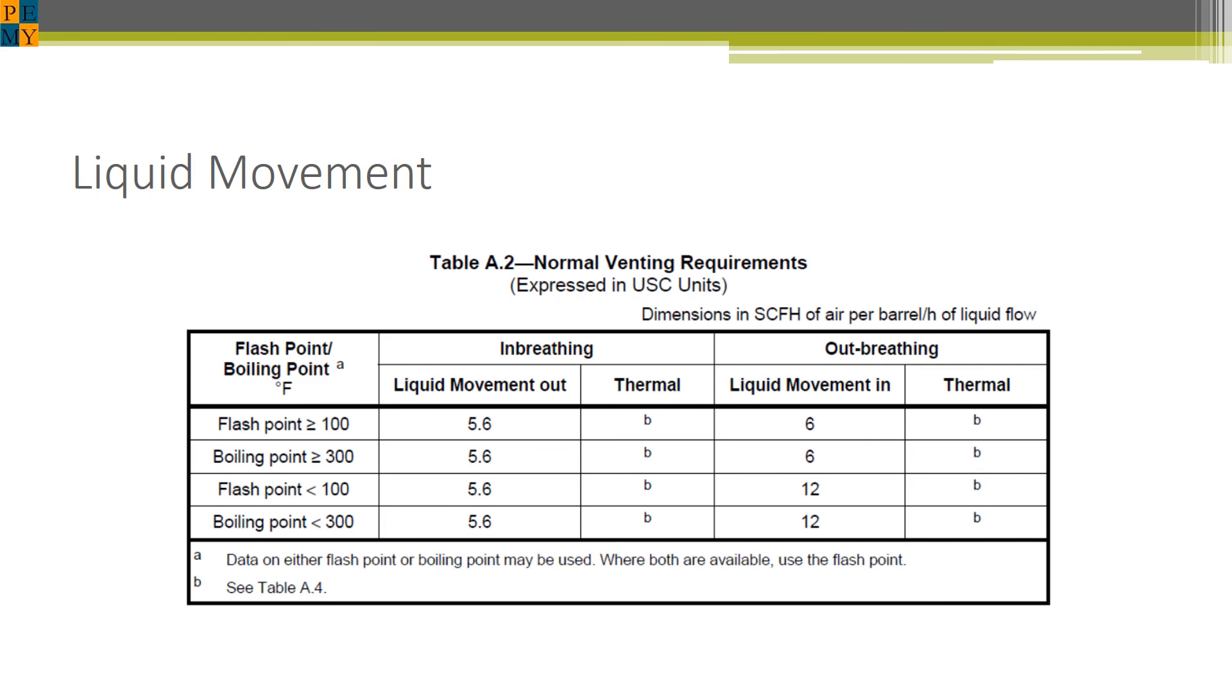To calculate the amount of venting required, we use this table where we use as an input the amount of liquid coming into or out of the tank in units of barrel per hour. We look up these factors that are dependent on the temperature, which determine whether the product is volatile or not. However, this is really just a unit conversion of the flow rate converting it from barrels per hour to standard cubic feet per hour.